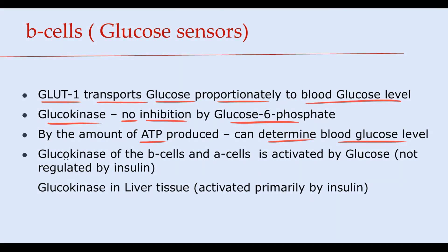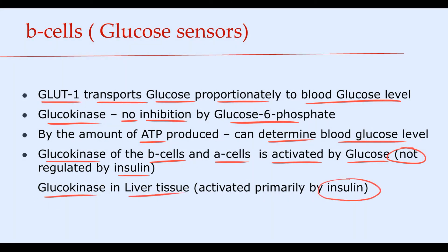Importantly, while hexokinase is found in most cells of the human body, glucokinase is found primarily in liver tissue and pancreatic beta and alpha cells. The glucokinase of beta and alpha cells is activated by glucose and is not regulated by insulin, in contrast to liver glucokinase, which is activated primarily by insulin. This is another feature that makes alpha and beta cells capable of correctly assessing blood glucose level.